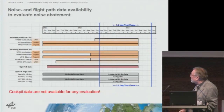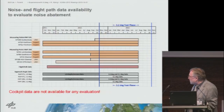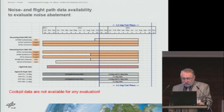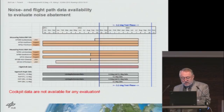Before the start of operation, that's the reference data, and that's the 3.2-degree test phase between the blue lines. In addition, we had radar data available, along with data indicating whether 3.0 or 3.2 degrees were flown. We don't have any cockpit data — we tried to get that in the beginning, but unfortunately it didn't work out, which made it very difficult to evaluate the findings.